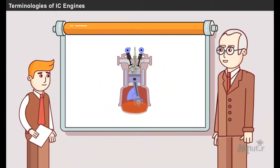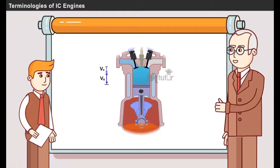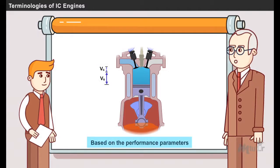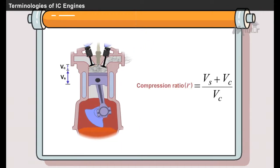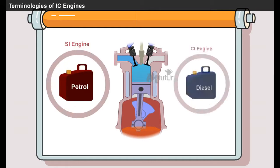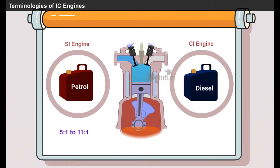The terminologies you have just learned are based on the working features of the IC engine. Now I will explain to you the terminologies based on the performance parameters. We will start with compression ratio. It is the ratio of the total cylinder volume to clearance volume. The compression ratio varies from 5:1 to 11:1 in SI engines and from 12:1 to 24:1 in CI engines.